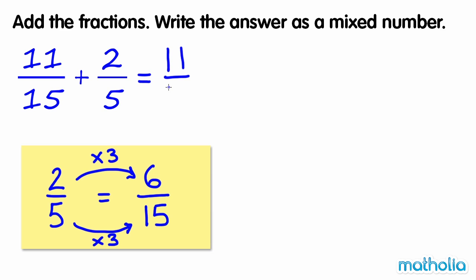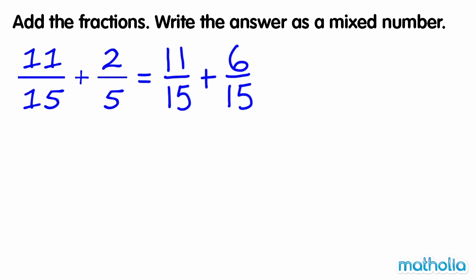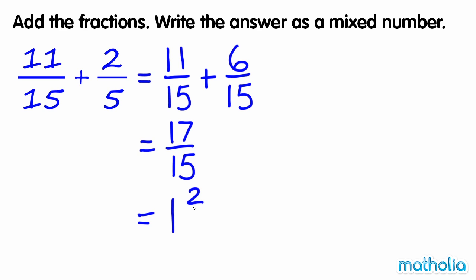We can now rewrite the equation as eleven-fifteenths plus six-fifteenths. The denominators are the same, so we can add the numerators. Eleven plus six equals seventeen, so eleven-fifteenths plus six-fifteenths equals seventeen-fifteenths. We can rewrite the improper fraction seventeen-fifteenths as the mixed number one and two-fifteenths. So eleven-fifteenths plus two-fifths is equal to one and two-fifteenths.